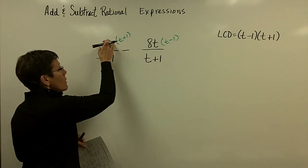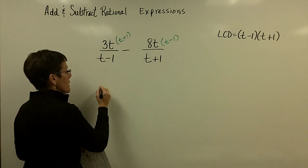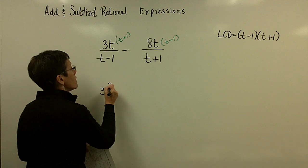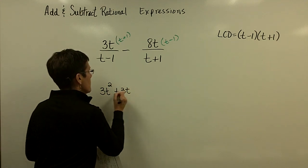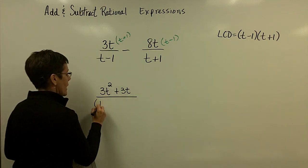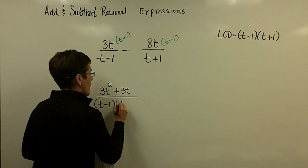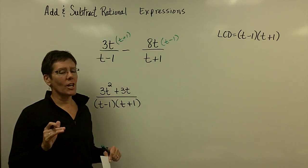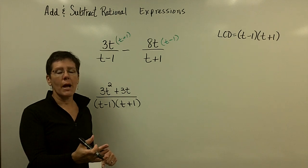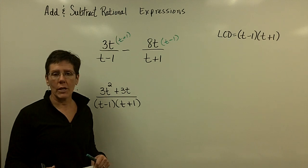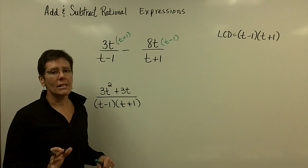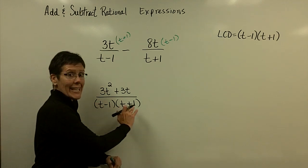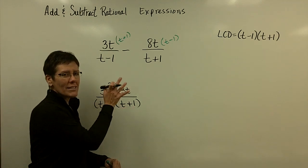So when you multiply this by the t plus 1 and get the 3t squared plus the 3t, your denominator now has the t minus 1 in it and the t plus 1. The only reason this might become a little difficult is the next style of problem that we're going to work, which is solving rational equations. If the goal is to eliminate the denominators, not to get a common denominator, the process is very similar, so you sometimes get them confused.